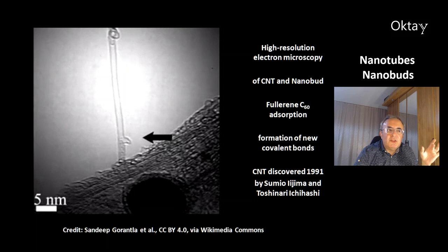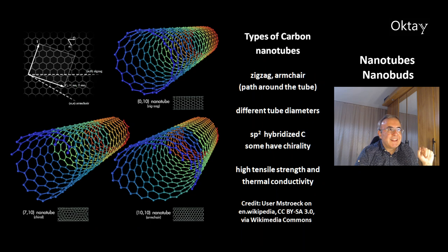The carbon nanotubes were discovered in the year 1991 by Sumio Iijima and Toshinari Ichihashi.